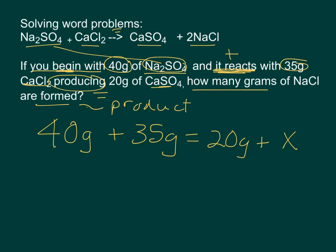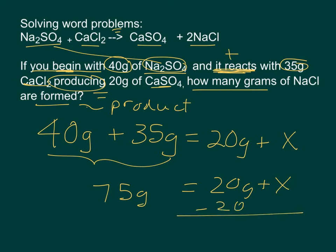Once I have this equation written out, then it's simple algebra. I can take these two numbers and add them together. So I can come up with 75 grams is equal to 20 grams plus X. To solve for X, I want to get that all by itself. So I'm going to subtract 20 from each side. And this cancels out, and it basically gives me X is equal to 55 grams. So my answer is 55 grams of NaCl are formed.